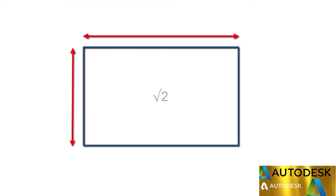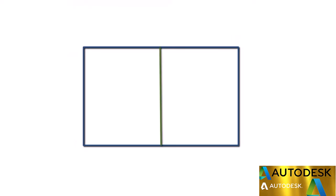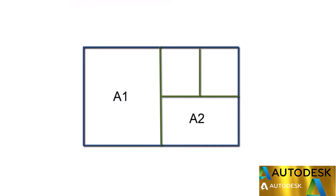This relationship between length and width is maintained for all papers in the A series — whether A1, A2, or others, dividing the length by width always gives root 2. Also, when you fold A0 from the center along the longer side, it becomes A1. Folding A1 gives A2, then A3, then A4, and so on.